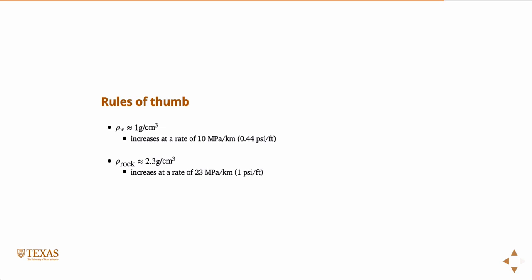So the density of rock is 2.3 grams per centimeter cubed. That's not so easy to remember. But the second part is, it increases at a rate of 23 megapascal per kilometer, or very conveniently, one PSI per foot. So what is the overburdened stress over the continental United States at 8,000 feet? 8,000 PSI. Very easy.